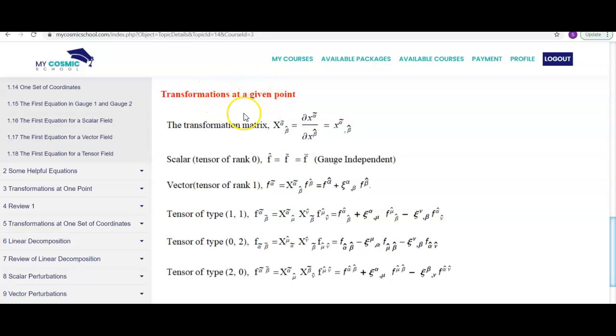But these are not the gauge transformations. The gauge transformations are the transformations at one set of coordinates. So now we are going to look at the transformations at one set of coordinates, which are actually the gauge transformations.